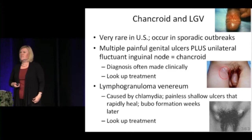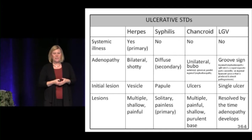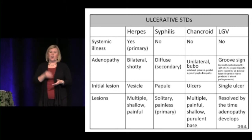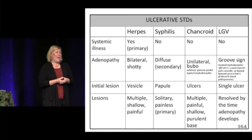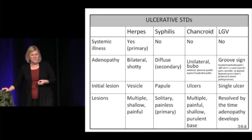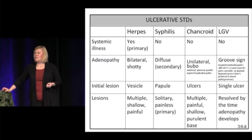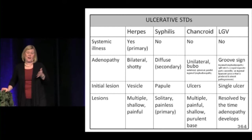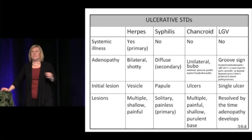A summary chart compares herpes, syphilis, chancroid, and LGV. Key differentiator: herpes can cause a systemic illness (especially with primary infection); syphilis has a painless ulcer while herpes is very painful. The characteristics of adenopathy, initial lesion appearance, and presence of pain help you clinically differentiate one condition from another.